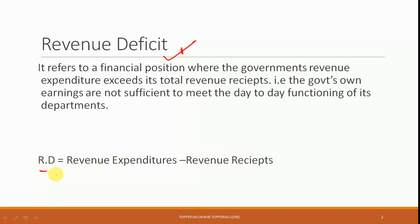So the difference between these two sets — expenditures and receipts — is what gives us the revenue deficit. This is important because revenue expenditure represents the daily expenditure of the government for day-to-day maintenance and functioning.